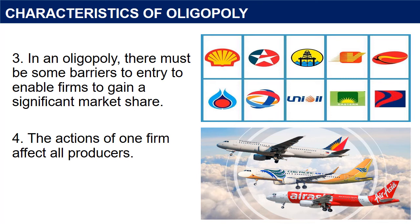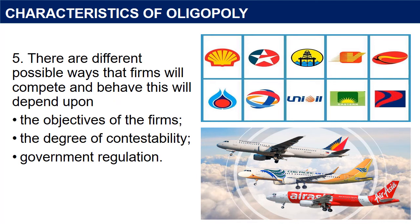These barriers to entry may include brand loyalty or economies of scale. However, barriers to entry are less than monopoly. 4. The actions of one firm affect all producers. Companies will be affected by how other firms set price and output. 5. There are different possible ways that firms will compete and behave; this will depend upon the objectives of the firms, e.g. profit maximization or sales maximization, the degree of contestability, e.g. barriers to entry, and government regulation.